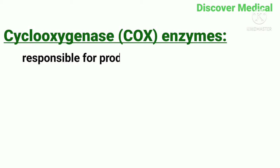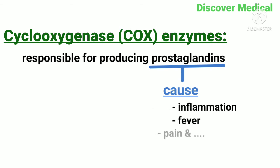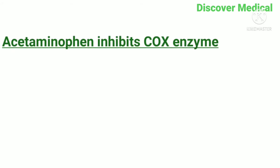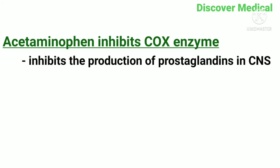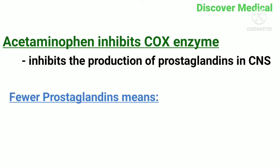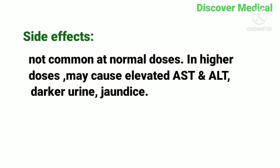Cyclooxygenase enzymes are responsible for producing prostaglandins, which cause inflammation, fever, pain, and more. Acetaminophen inhibits the cyclooxygenase enzyme, which inhibits the production of prostaglandins in the central nervous system. Less prostaglandins means reduced fever and reduced pain.